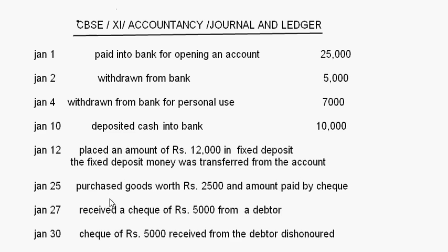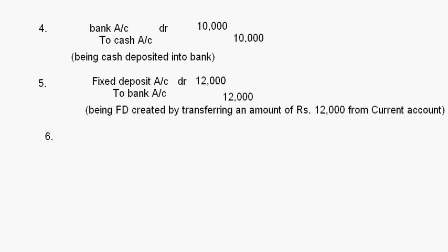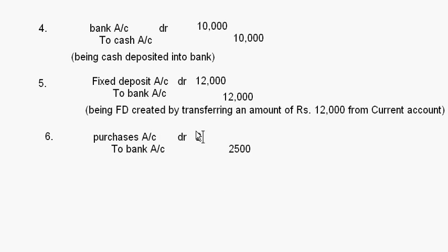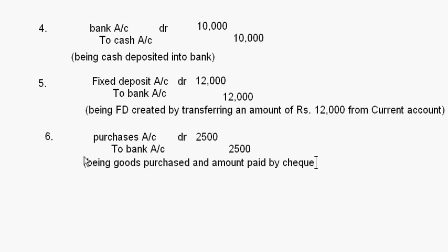Next: purchased goods worth rupees 2,500 and amount paid by check. We are purchasing the goods and paying the amount by check, so instead of cash it is bank. We write purchases account debit to bank account, the amount was 2,500, being goods purchased and amount paid by check.